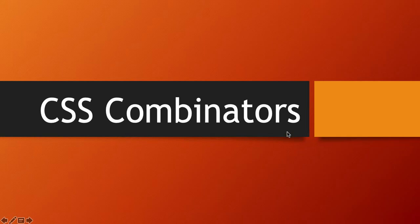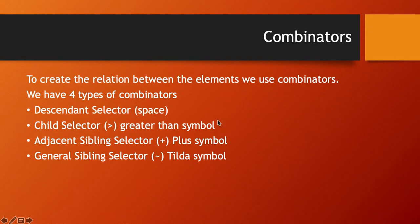Welcome back. In today's topic we will understand CSS combinators. Combinators we use very regularly when we are working on web development. Combinators are nothing but creating the relation between elements. There are four types of combinators: descendant, where we use space; child selector, where we use greater than symbol; adjacent sibling selector, where we use plus; and general sibling selector, where we use tilde.